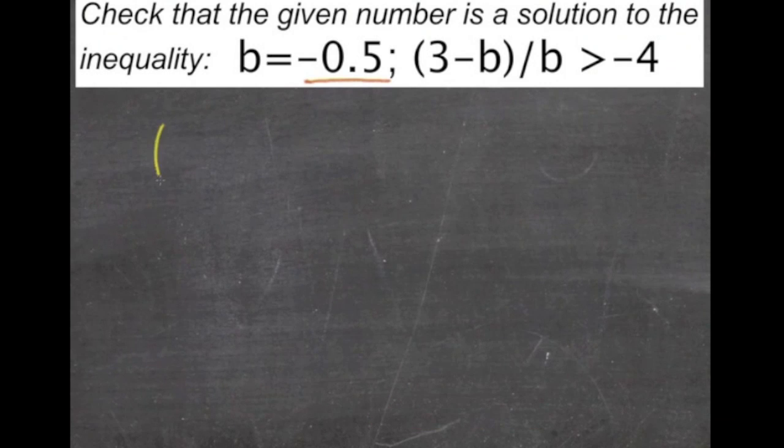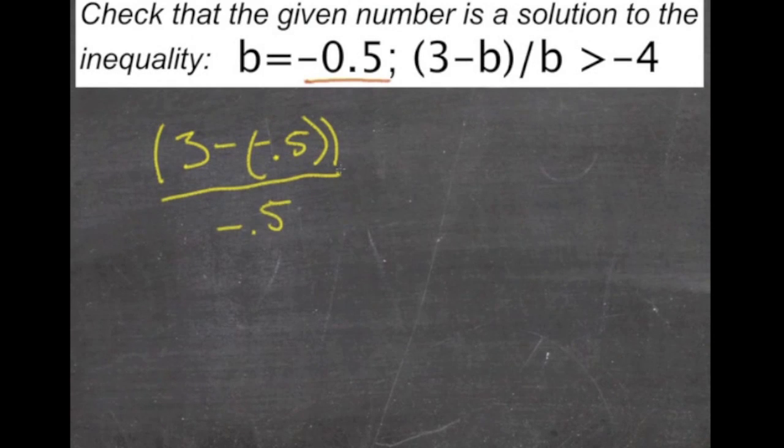So we'll have the quantity 3 minus negative 0.5 divided by negative 0.5 is greater than negative 4. So we do our order of operations, tells us we need to worry about this section up here first. 3 minus negative 0.5, when we're subtracting a negative we add, so that gives us 3.5 on top.